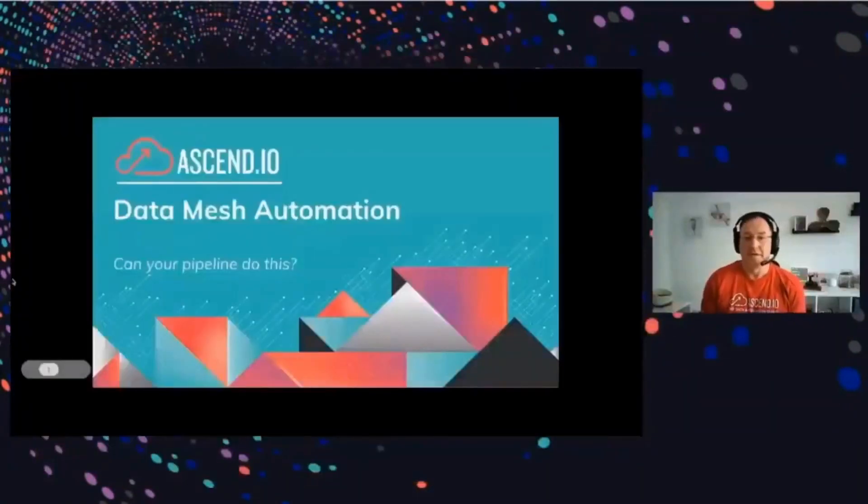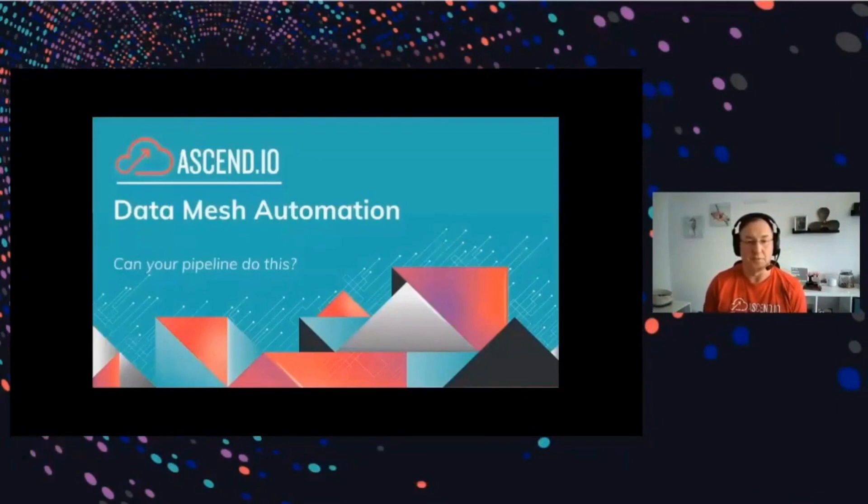Hi, my name is John Osborne and I'm really excited to talk at the Ascend Data Pipeline Automation Summit here in 2023. Let's get started. My name is John Osborne. I'm the field CTO here at Ascend. I have the excellent job of evangelizing data automation and pipelines, but also helping the product team work through features and activities for improving Ascend as a product.